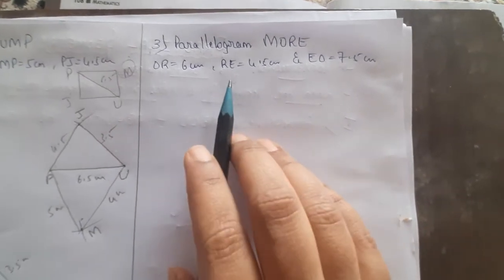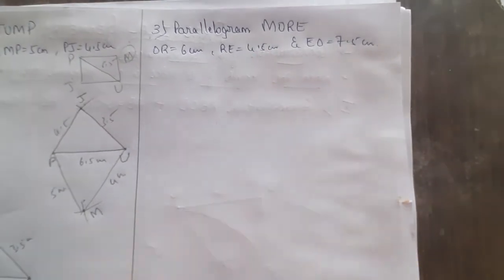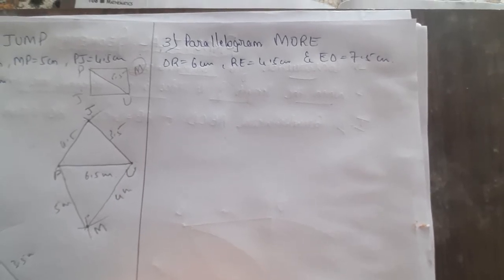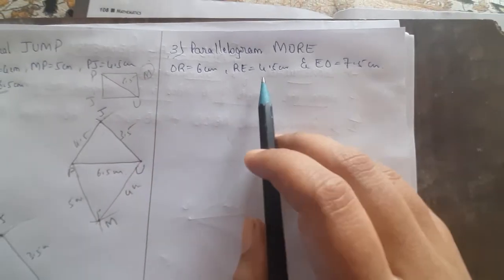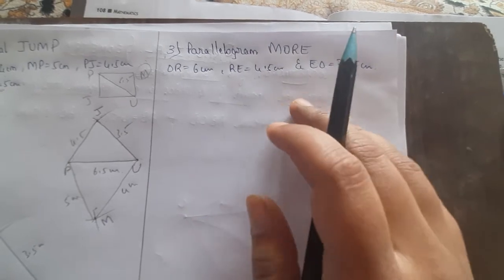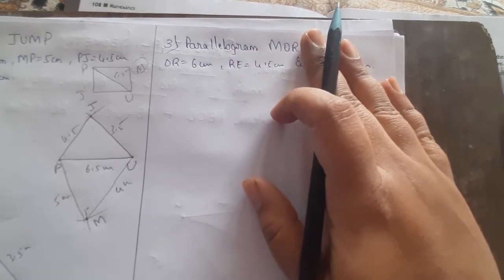So children, in this case you have to remember the properties of a parallelogram. One of the properties says that the opposite sides of a parallelogram are parallel and equal. So using that property, suppose if we consider E-O as the diagonal,